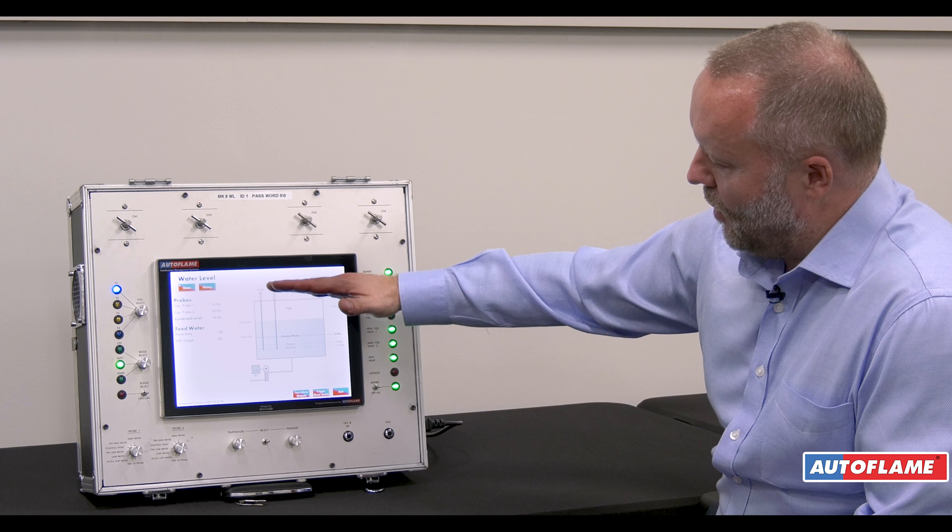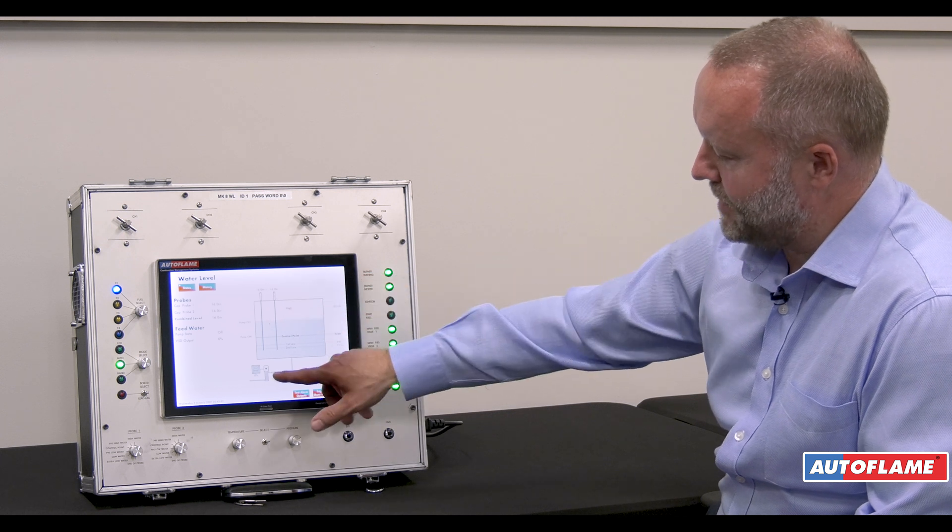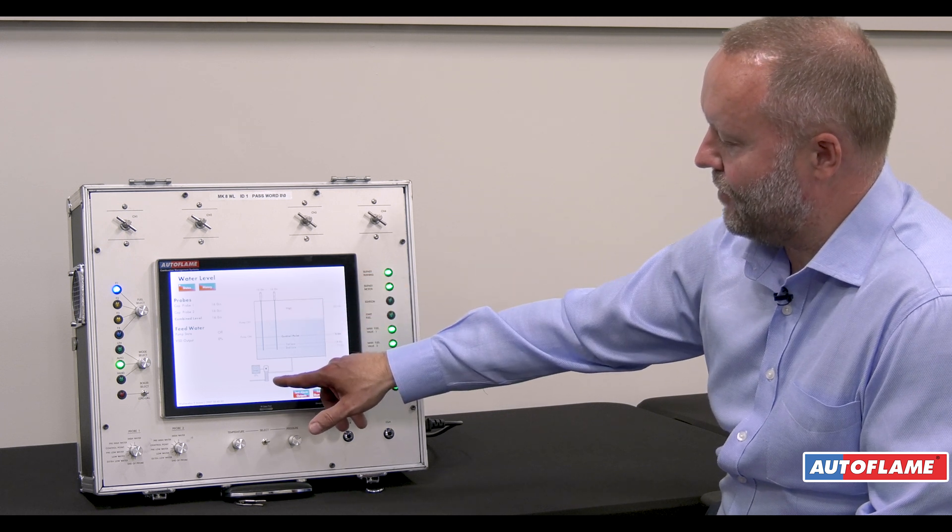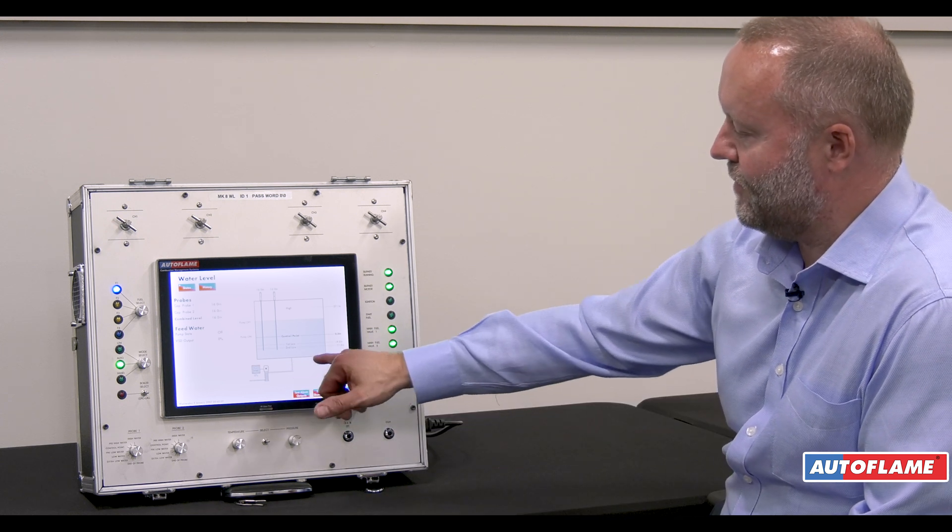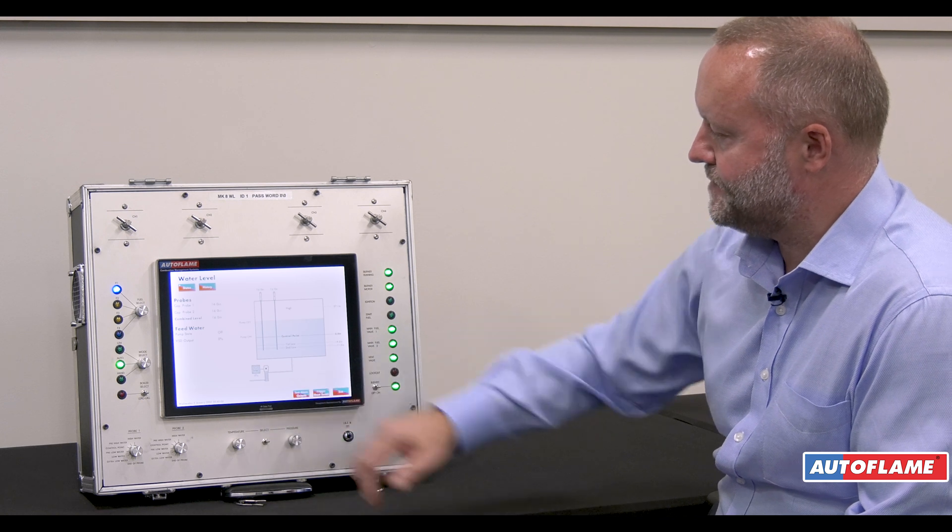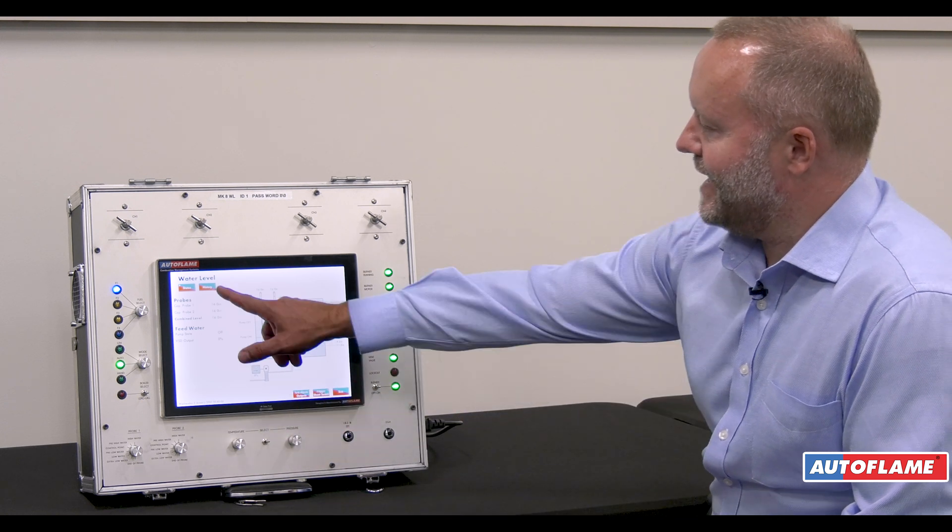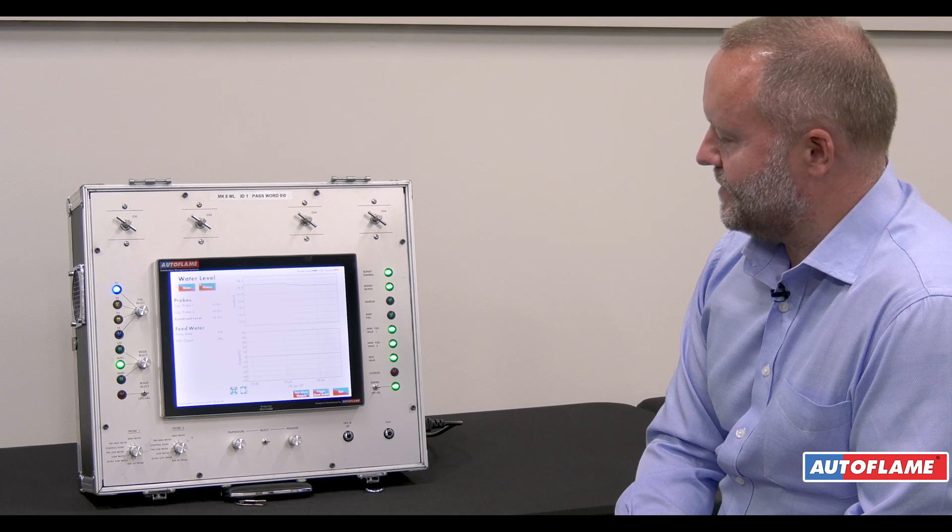Depending on the level of water in the boiler, we can speed up and slow down the feed water pump, or we can control a feed water valve. This example shows a pump rather than a feed water valve. This information is logged historically within the system.